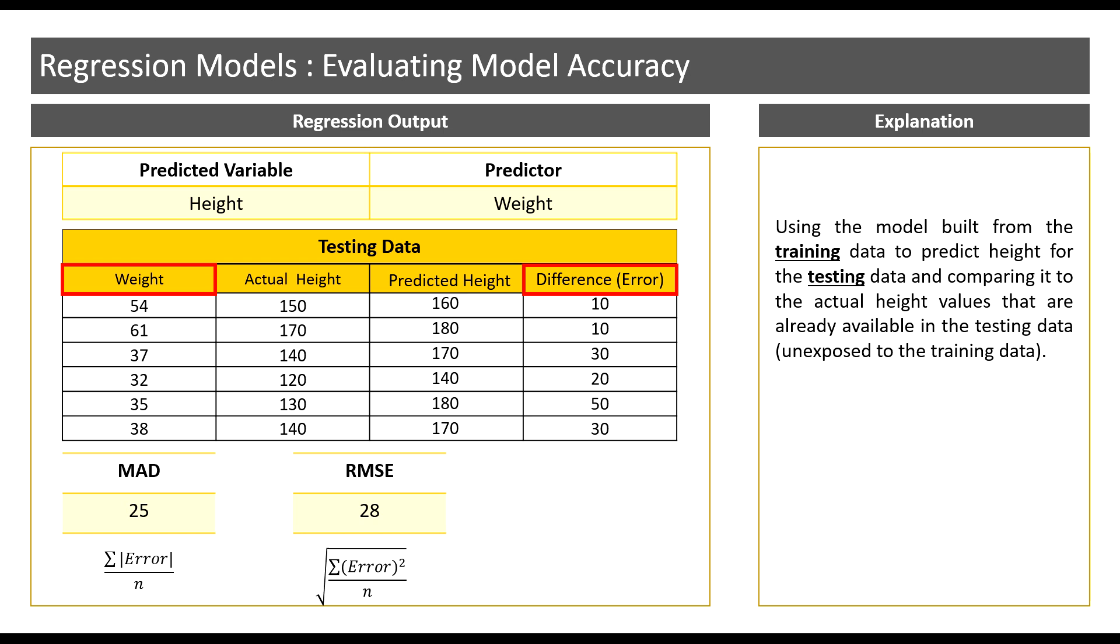Step two: we then take the square root of the value obtained from step one. Now the third and last measure is MAPE, that is mean absolute percentage error.